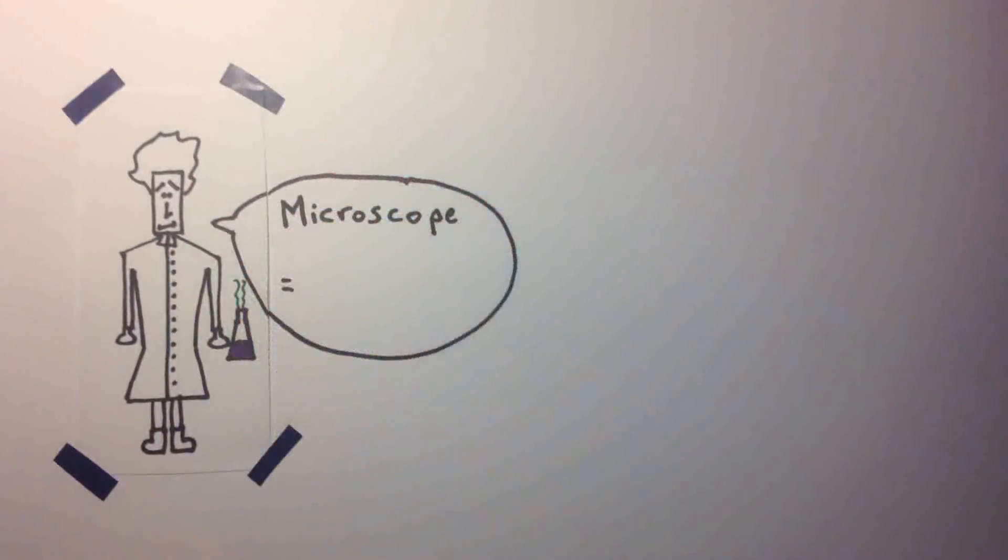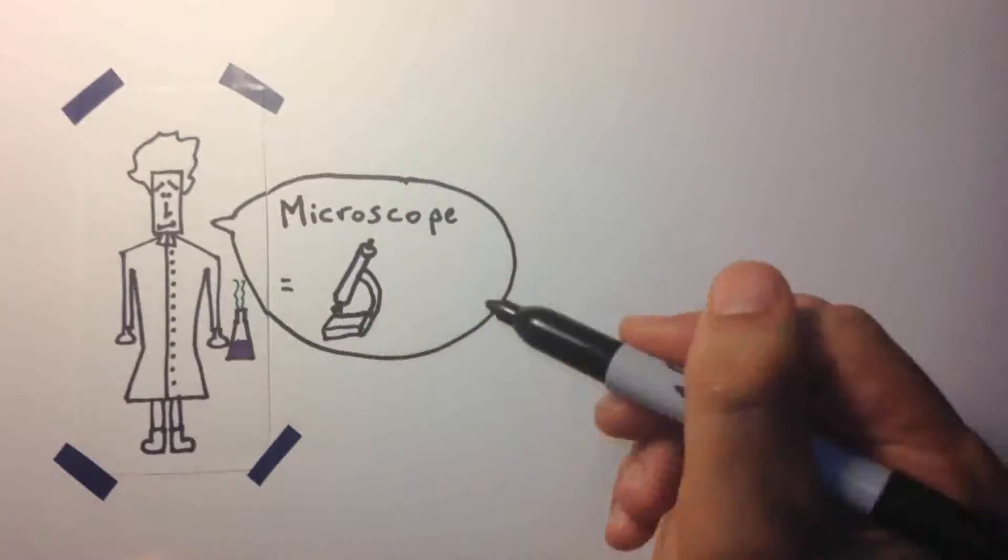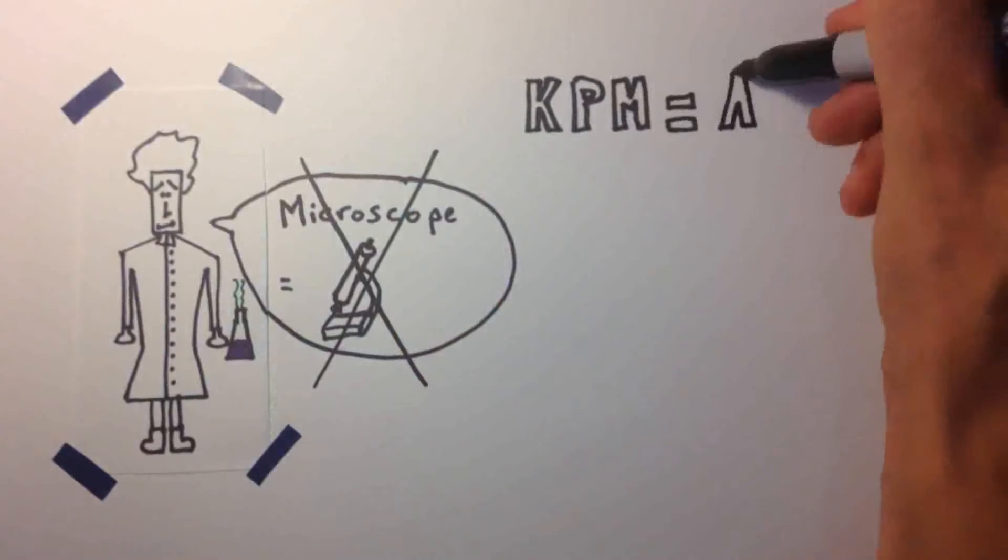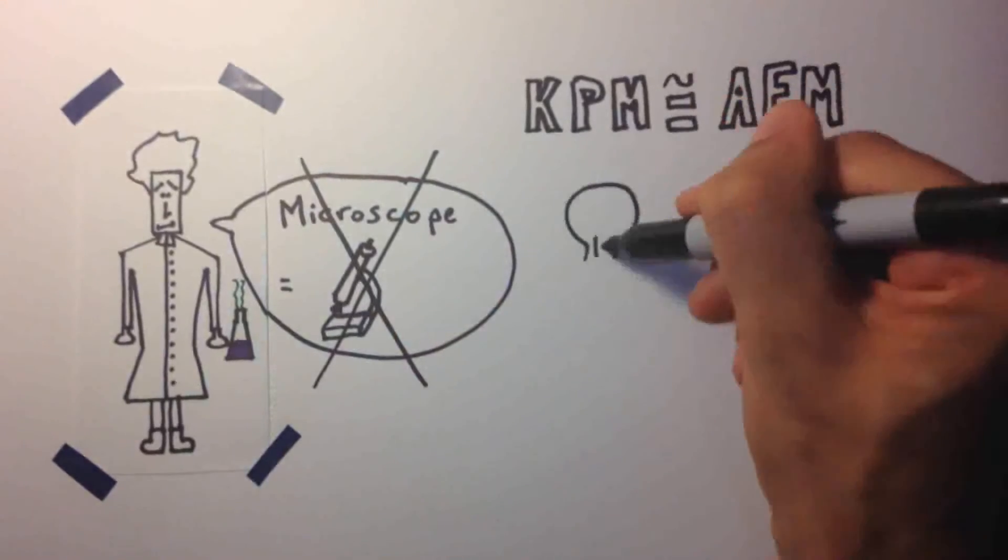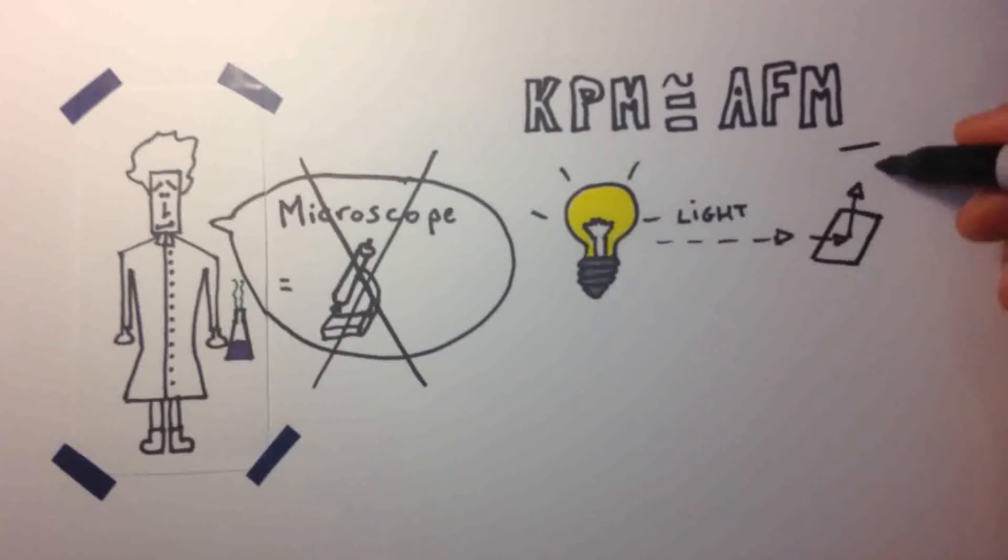Usually, when we think about microscopy, it comes to our mind the idea of an optical microscope, but this is not the case. In fact, the Kelvin probe microscopy is a variant of the atomic force microscopy, and it does not measure the interaction between the light and the specimen.